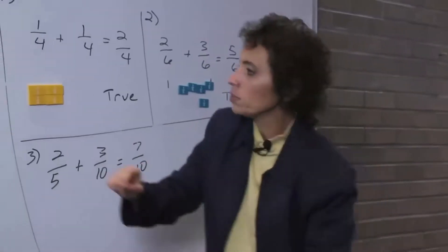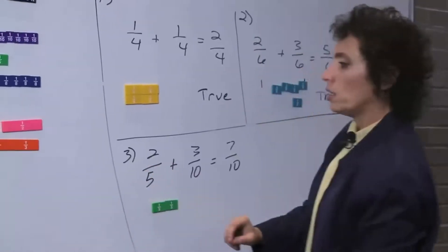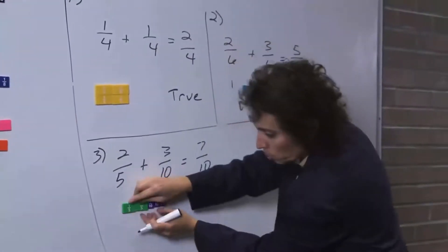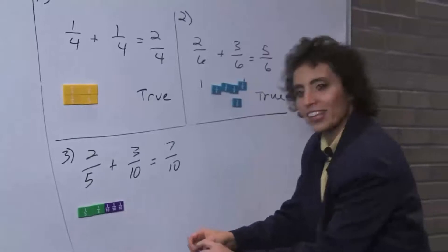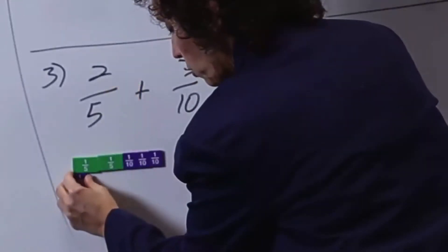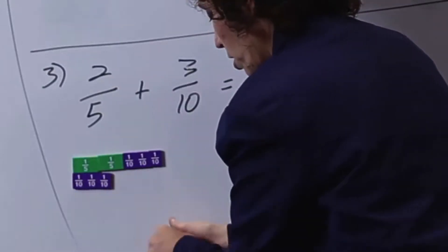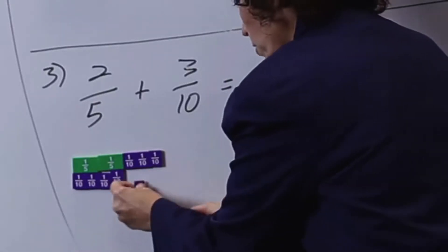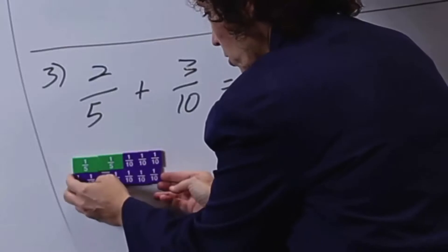What about two fifths plus three tenths? Do I have tenths? I do. Plus three tenths, and that's supposed to be equal to seven tenths. Let's see if that's equal to seven tenths. One, two, three, four, five, six, seven. I'm thinking that's a yes. So that's also true.